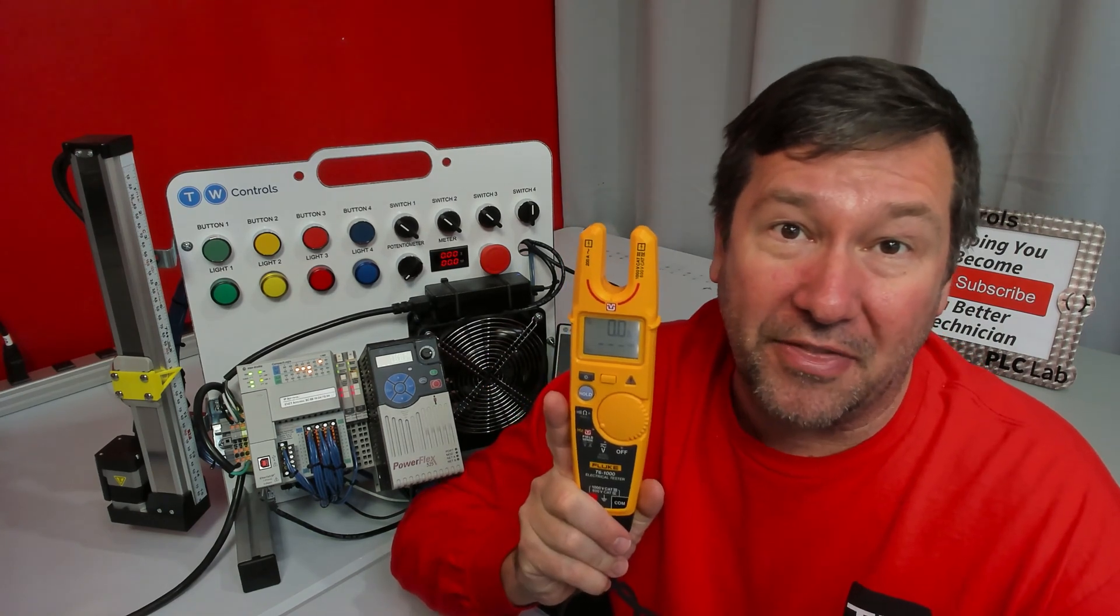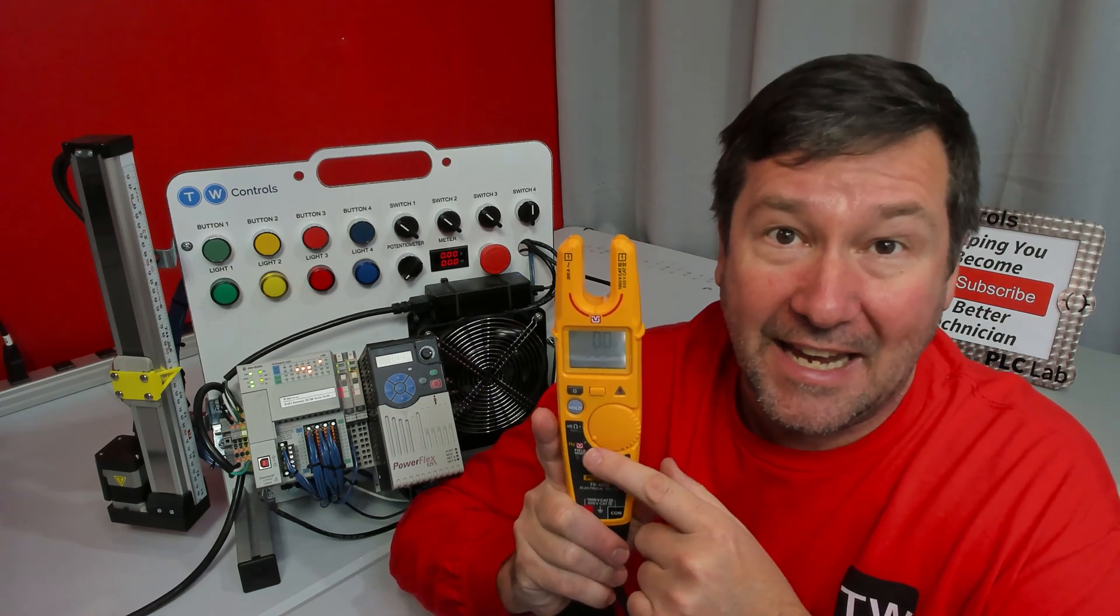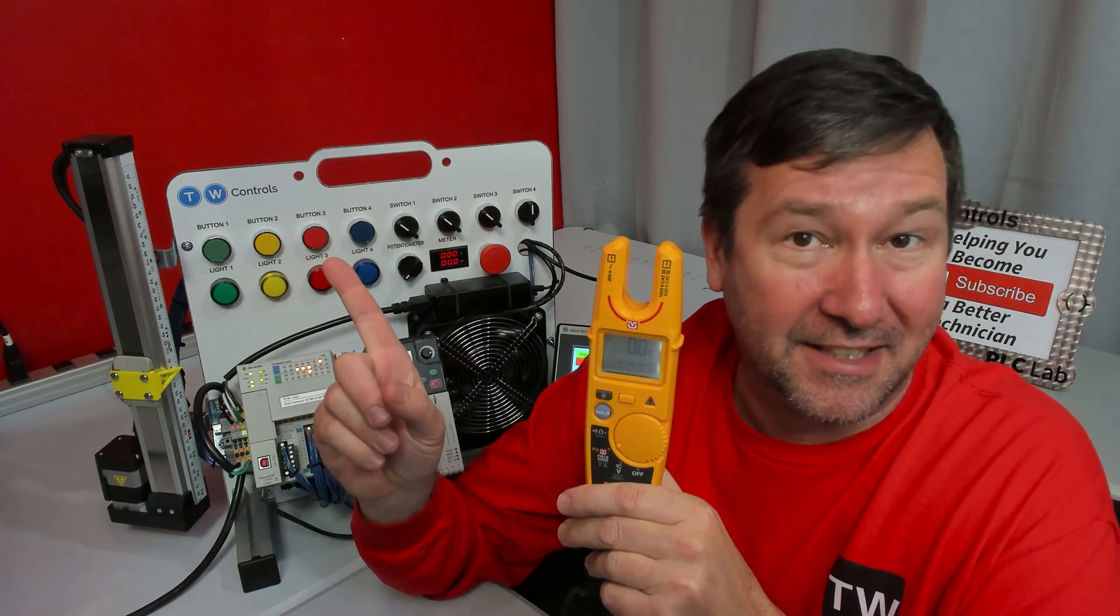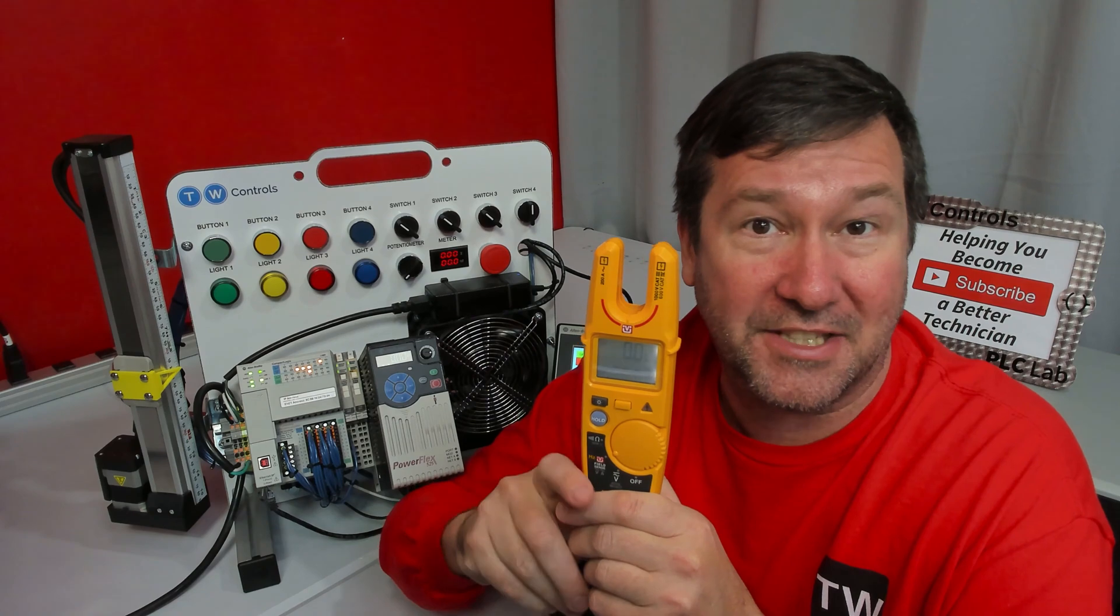Or check out this Fluke T6-1000. It automatically switches between AC and DC, resolving that issue. Click here for a playlist that includes a video reviewing it and some other helpful meter selection tips.